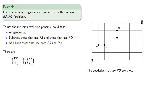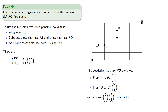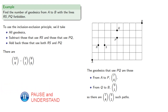The geodesics that use PQ are going to be all those from A to P and all those from Q to B, and so we'll want to subtract those as well.